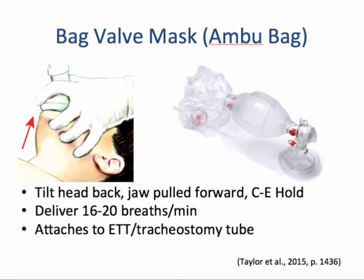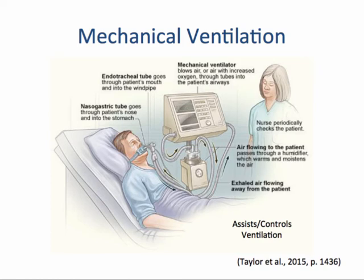The bag valve mask or ambu bag is used to provide ventilation when the patient's ventilations are too slow, weak, or absent. Tilt the head back, pull the jaw forward, and use the CE hold — form a C with your thumb and index finger around the device, and the remaining fingers make an E on the jaw. Deliver 16 to 20 breaths per minute. This device also attaches to an existing endotracheal tube or tracheostomy tube. Mechanical ventilation provides machine-assisted breaths for the patient with inadequate ventilation, attached to an endotracheal, nasotracheal, or tracheostomy tube, and can be set to deliver specific volumes, pressures, ventilatory rate, and oxygen.